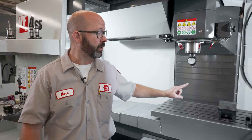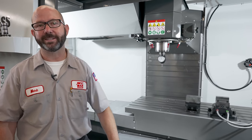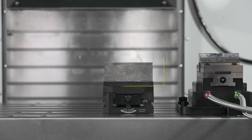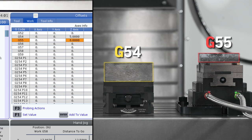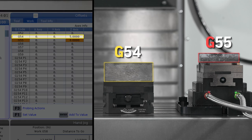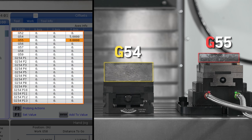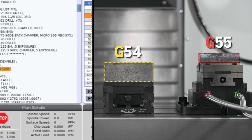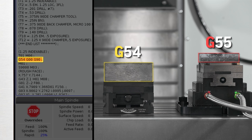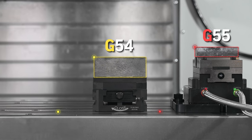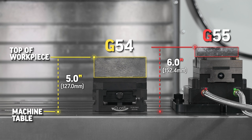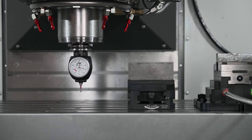So we're going to set that now. Each workpiece, each part, will have its own work offset like G54, G55, and so on. We have lots of work offsets available. We'll command these work offsets from within our G-code programs so the machine knows what part we're working on. With the method we are using today, our work offset is a distance from our machine table to the top of our workpiece. We will measure this distance with an indicator.